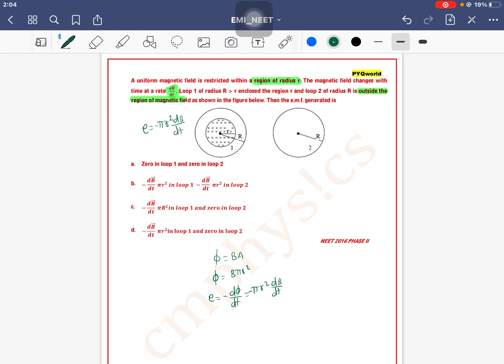For loop number one. And in loop number two, there is no flux at all. They already said loop 2 of radius R is outside the region of magnetic field, meaning there is no magnetic field there, so there is no magnetic flux. So in loop 2, there is no EMF.